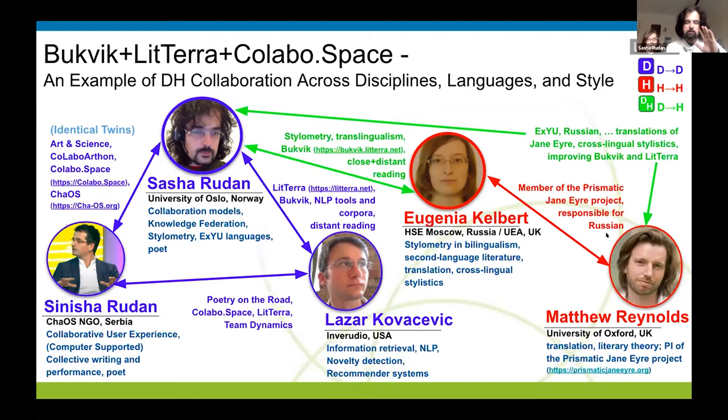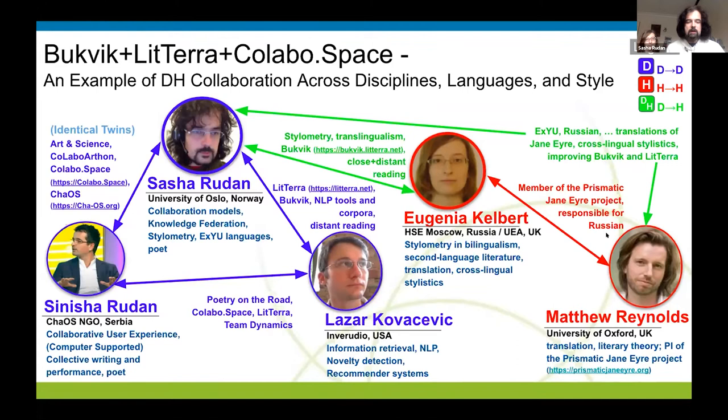We didn't talk too much about the tools we developed, but there are three important things. We started with the Bookwick tool, which is infrastructure for stylometric — mainly stylometric — analysis across languages. Second is Litera, which is more for presenting cross- and inter-textual relationships and findings done mostly by Bookwick. Third is Callable Space, which is infrastructure for ongoing research in collaboration — how we can augment and expand the capacity of these digital tools with collaborative features.